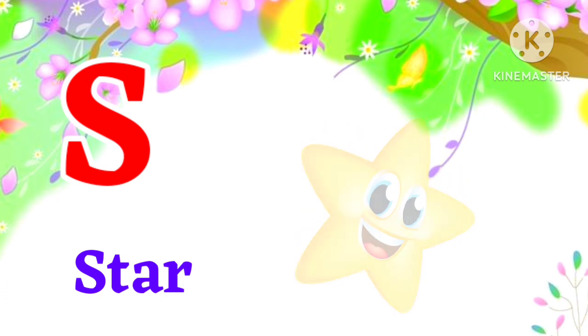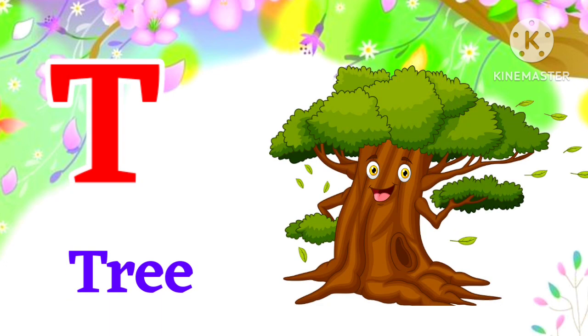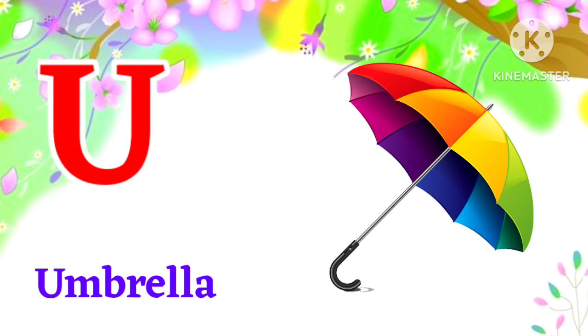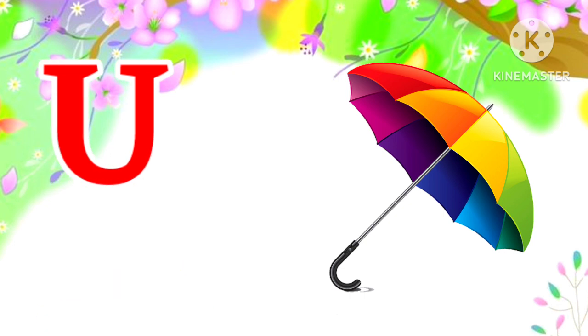Star means tara. T for tree. Tree means spare. U for umbrella. Umbrella means chata.